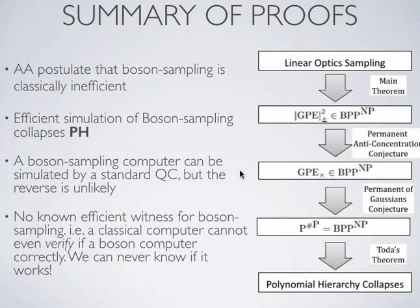A boson sampling computer can be simulated by a universal quantum computer, but the reverse is extremely unlikely. Another big problem with boson sampling is that unlike Shor's algorithm, there's no known efficient witness for boson sampling. Not only can a classical computer not simulate boson sampling, it can't even verify whether a boson sampling device operated correctly. So if I give you the statistics from my boson sampling device and ask you to verify them, we don't have a good understanding of how to do that — a big conceptual problem.